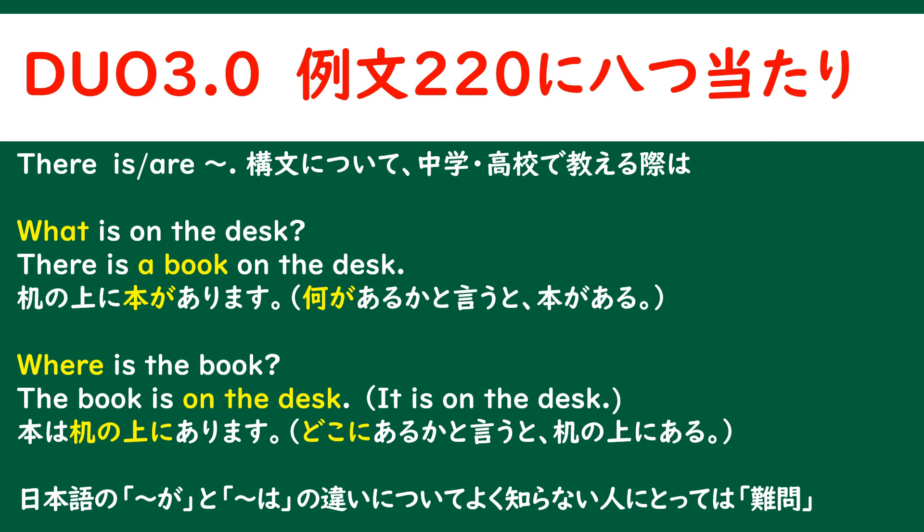「Where is the book?」その本はどこにありますか？という質問に対しては、「The book is on the desk.」または「It is on the desk.」その本は、または、それは、机の上にあります。どこにあるかというと、机の上にあるということになっております。